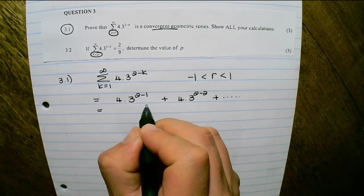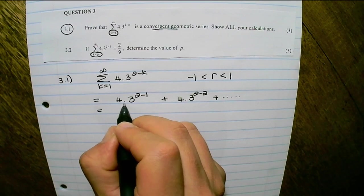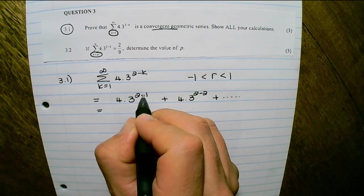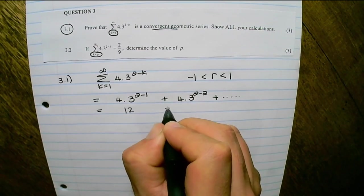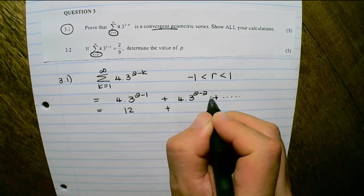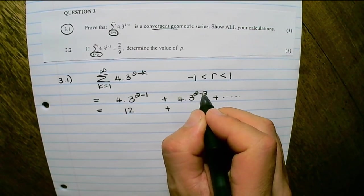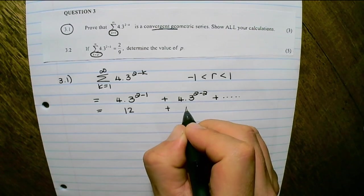If I simplify, I have 4 times 3 to the power of 1, which is 3, so that becomes 12, plus 4 times 3 to the power of 0, which is 1, so that is 4.